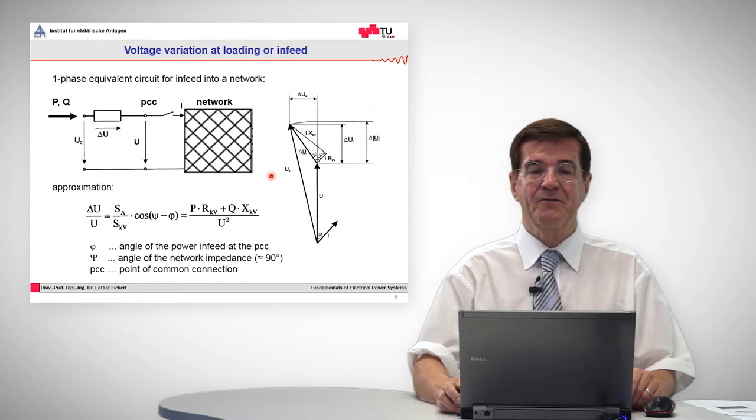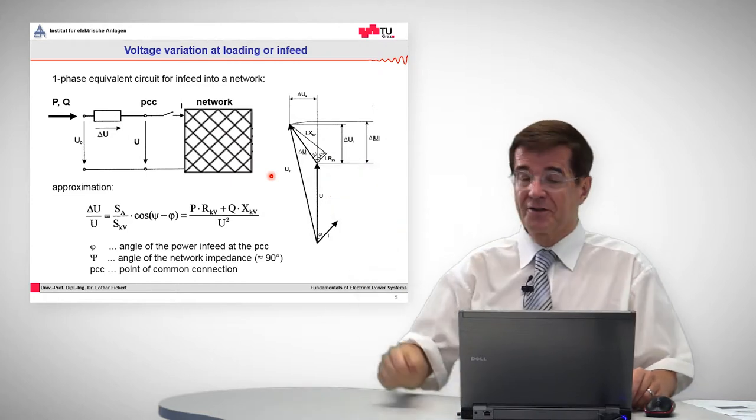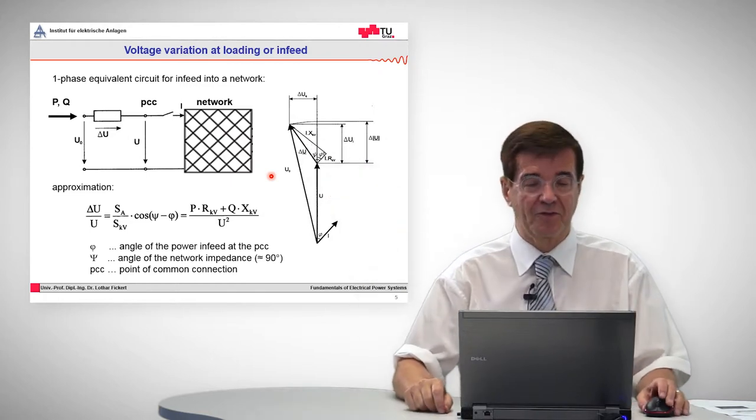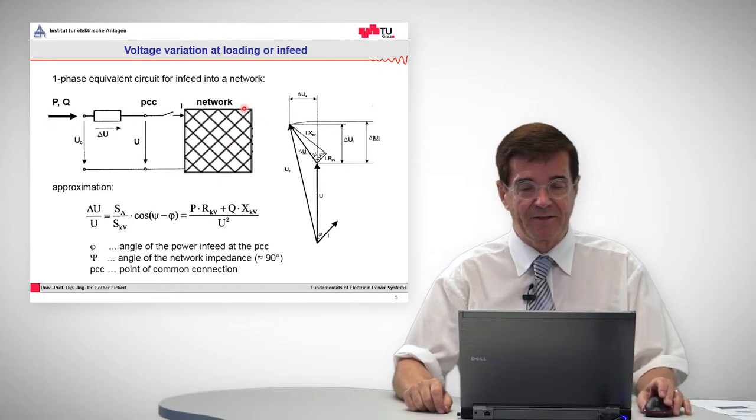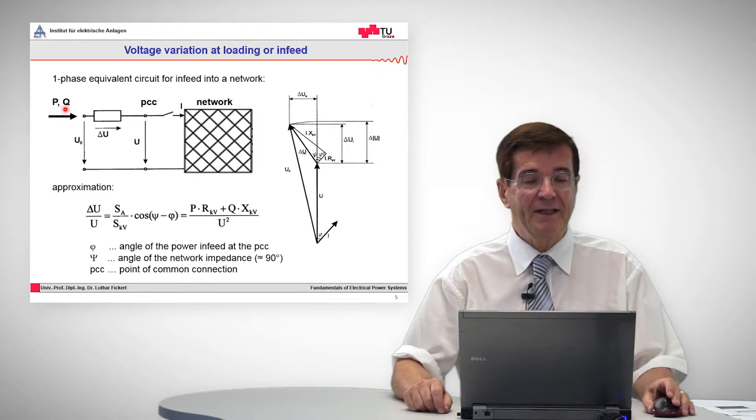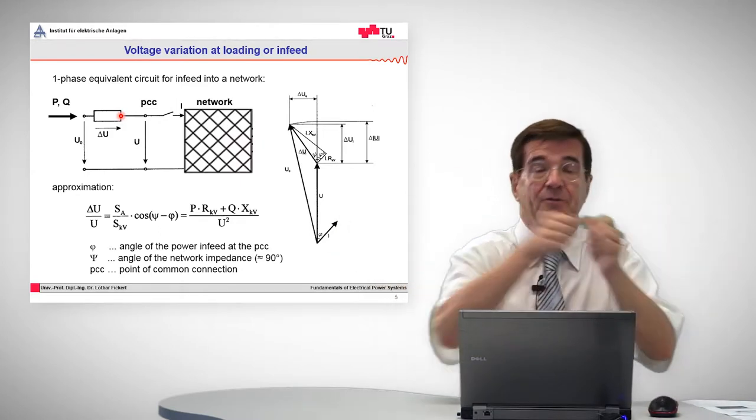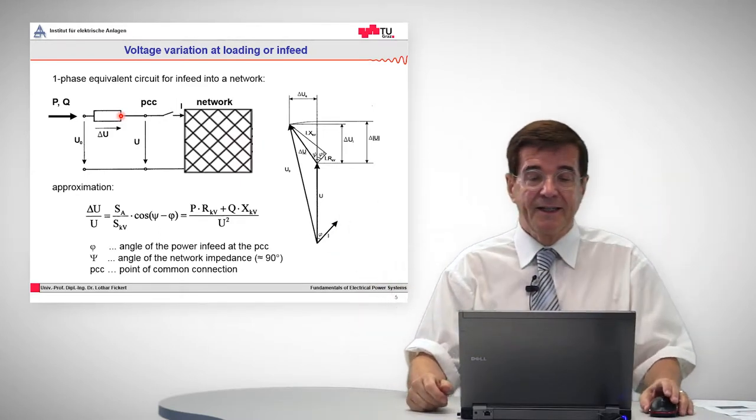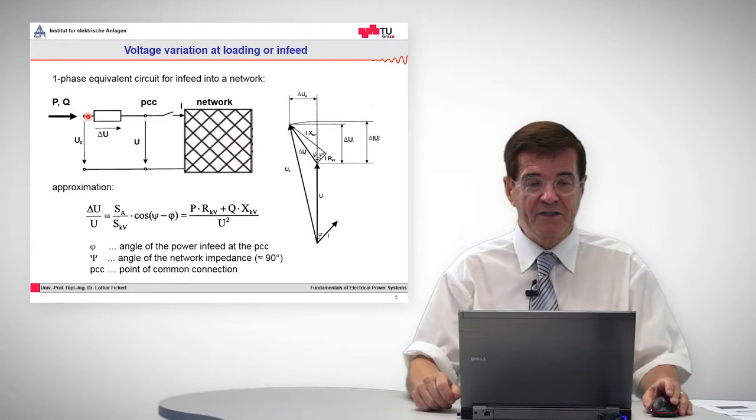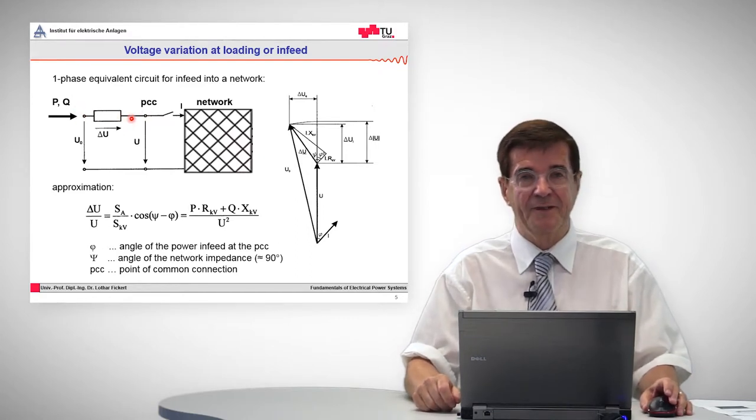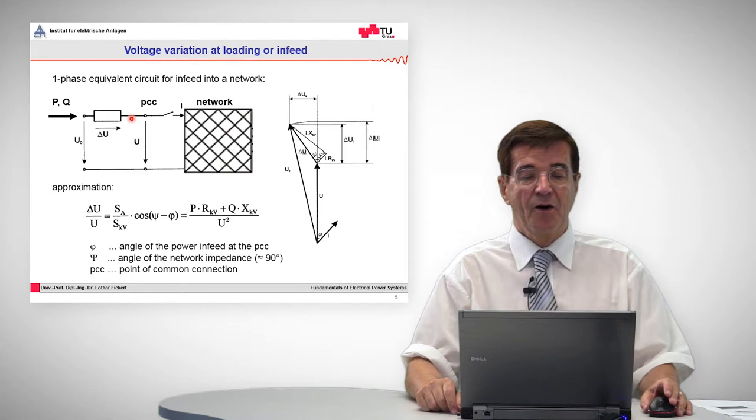Let's start with voltage variations due to infeed of load. Once into a grid, which is represented by this mesh network, power and reactive power are imported through an impedance, the connecting impedance between the generator and the net. Then there is a voltage drop across this line, we call it delta u.